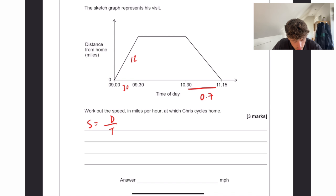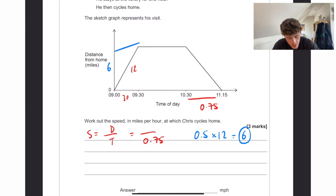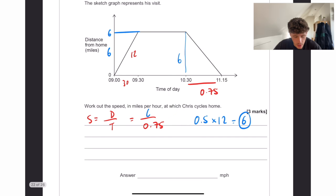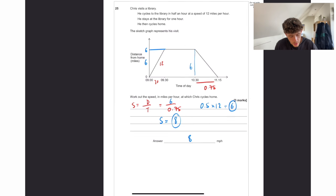We know the time is 0.75 hours because it's like 45 minutes. But we still need to work out the distance. So if Chris does half an hour at a speed of 12, that is going to be a total of 6 miles. So that must mean that there is 6. So that also means that the distance he has to travel back home is also 6. So that's going to be 6 divided by 3 quarters. And that must mean the speed is equal to 8 miles per hour.